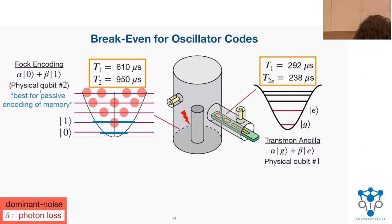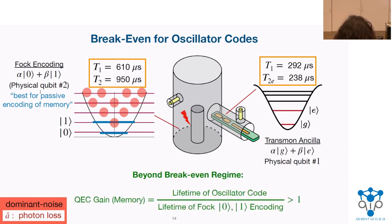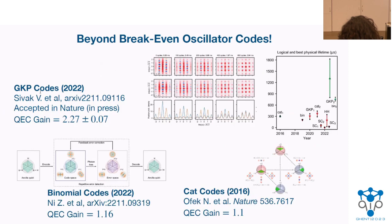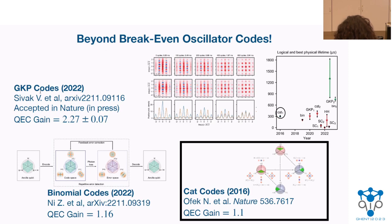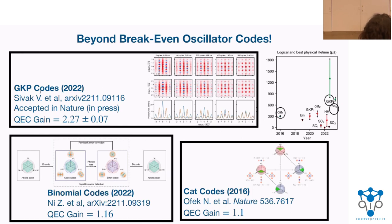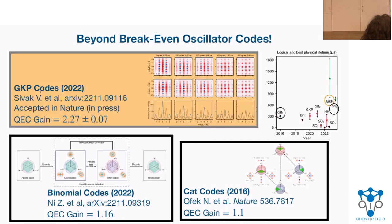The lifetime of the Fock-zero-one encoding is actually better than the transmon physical qubit, so it is the best two-level system I can realize for memory in my setup. This is what I use to define break-even for my oscillator codes: the ratio of the oscillator code lifetime to the Fock-zero-one encoding lifetime defines my QEC gain. Three oscillator codes have already achieved break-even: the CAT codes, which barely achieved it at 1.1 QEC gain; and two that came out in December 2022 within a day's difference. GKP codes hold the record at 2.3, and this is what we'll be talking about.